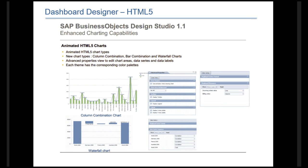Design Studio 1.0 was a very functional but very bare-bones dashboarding tool. In version 1.1, which has been released with 4.1, we've received a whole lot of updates. HTML5 is now much more compliant, the HTML5 elements are animated, and there are a number of new chart types — you can use column combinations, bar combinations, and waterfall charts.